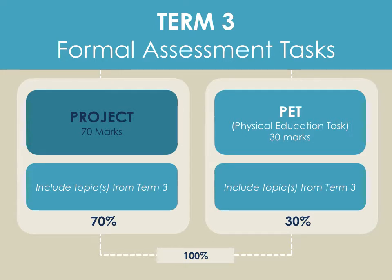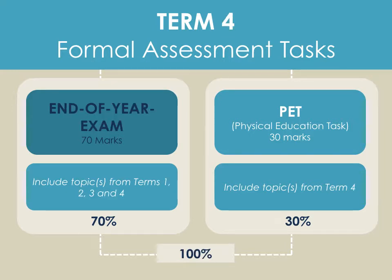In term 3, learners do a project — not a test or exam — and this project counts 70%, with the physical education task counting 30%, together making up 100%. In term 4, there's an end-of-year exam counting 70% and the physical education task counting 30%. What's interesting to note is the exam includes topics from terms 1, 2, 3 and 4, whereas the physical education task covers only topics from term 4.